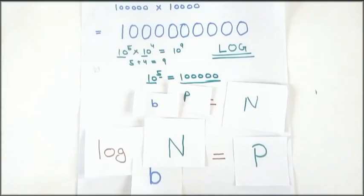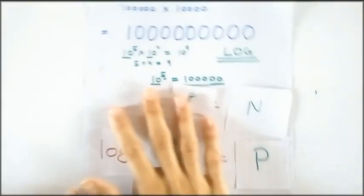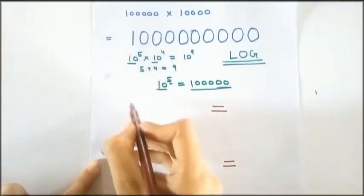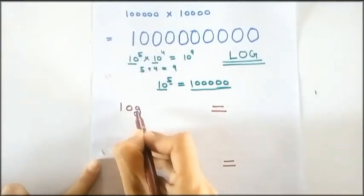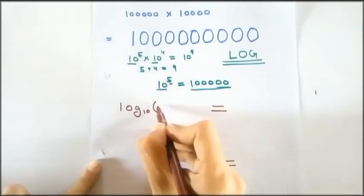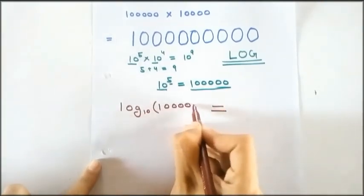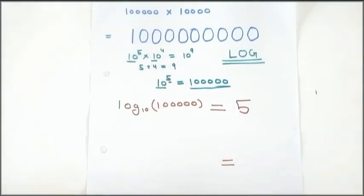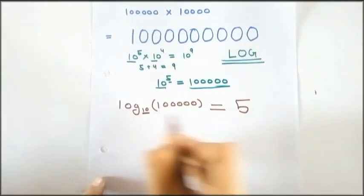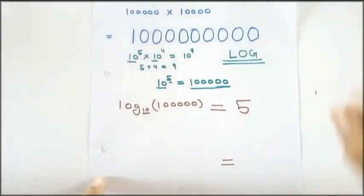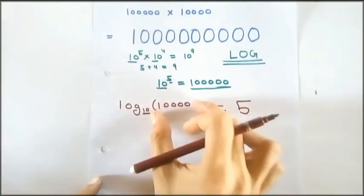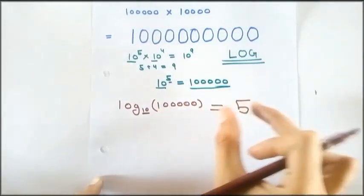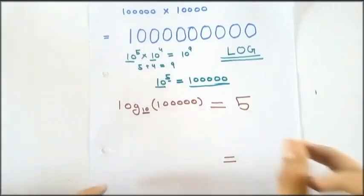Now, understand it in the most easiest way. That is, now I will write this in log. That is log base 10, 1 followed by 5 zeros is equal to 5. This is telling us that 10 will have 5 as the power to get this number. So, this basically gives us the power of the base. And then we will add those powers to get our answer.